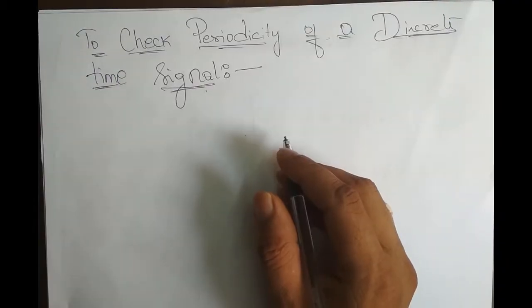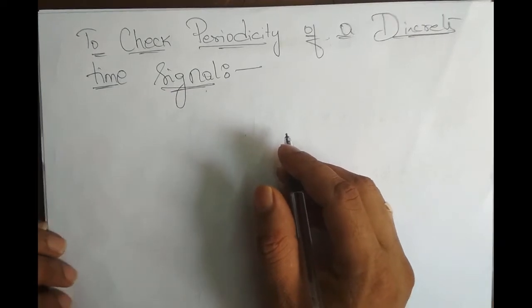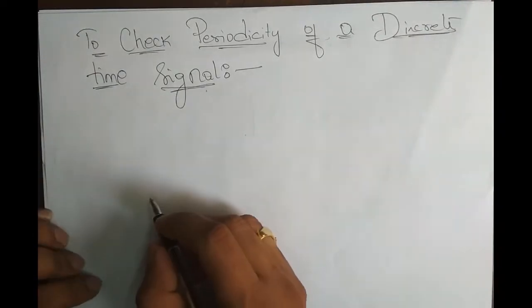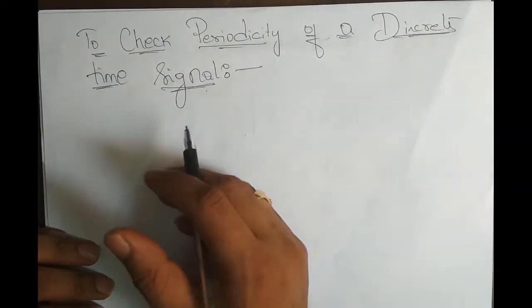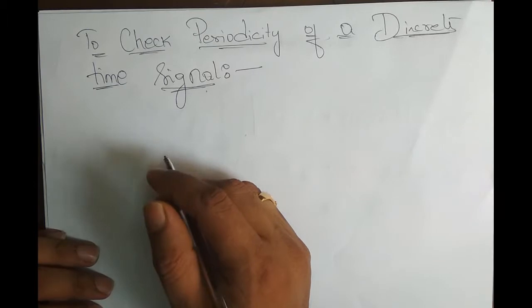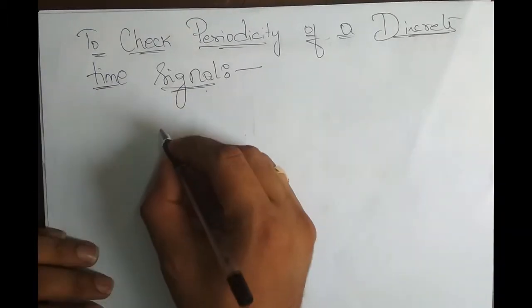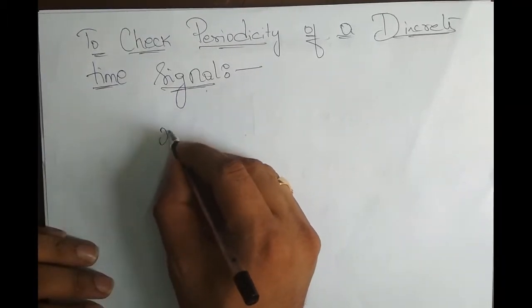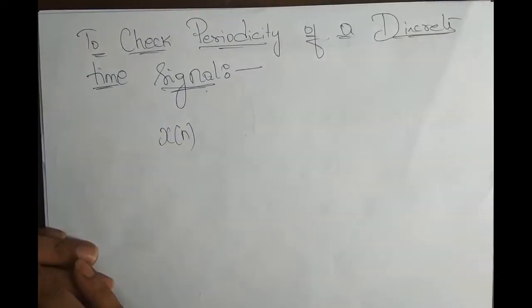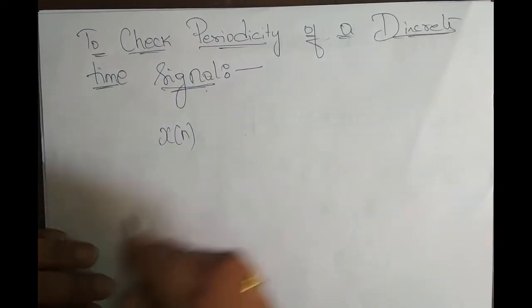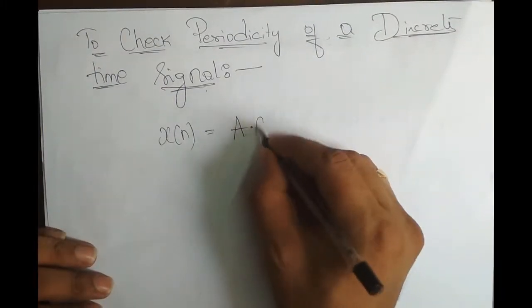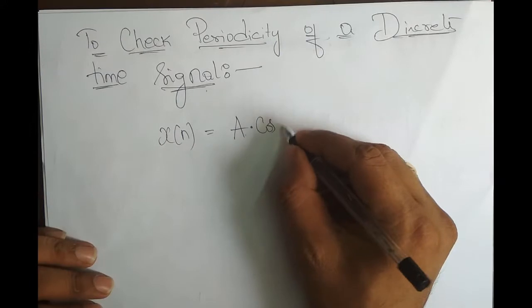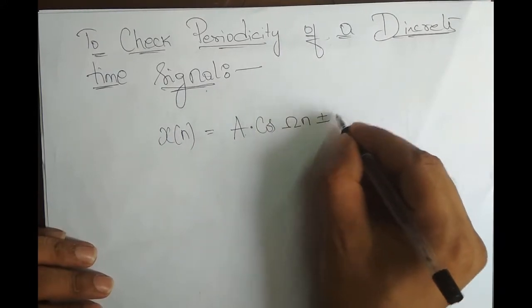Hello everyone. In this video, we will be testing discrete time signals for periodicity. The procedure is the same, only the equation for omega slightly changes. The general representation of a discrete time signal is given by x of n, which is equal to an instantaneous amplitude into cos of omega n plus or minus phi.